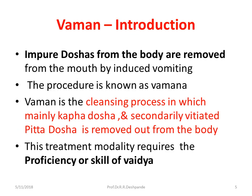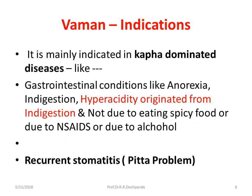Impure bioenergies like Kapha and Pitta are removed from the body. Especially when Kapha is toxic or impure, it is taken out through the mouth — that is called Vamana. Vamana is a cleansing process in which mainly Kapha dosha and secondarily vitiated Pitta dosha are removed from the body. This treatment modality requires proficiency and skill of the therapist or the Vaidya guiding the therapy.